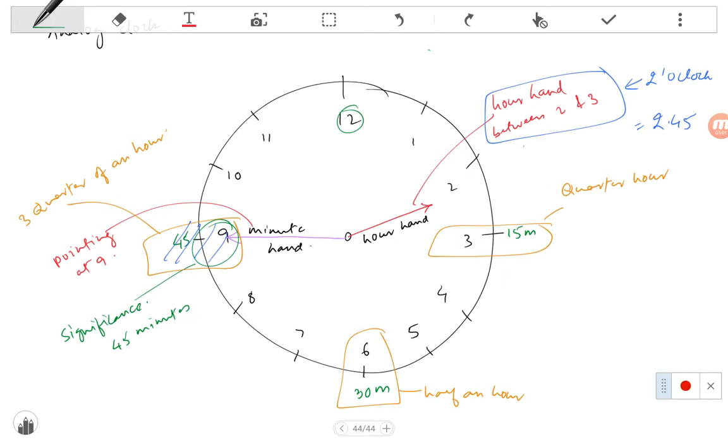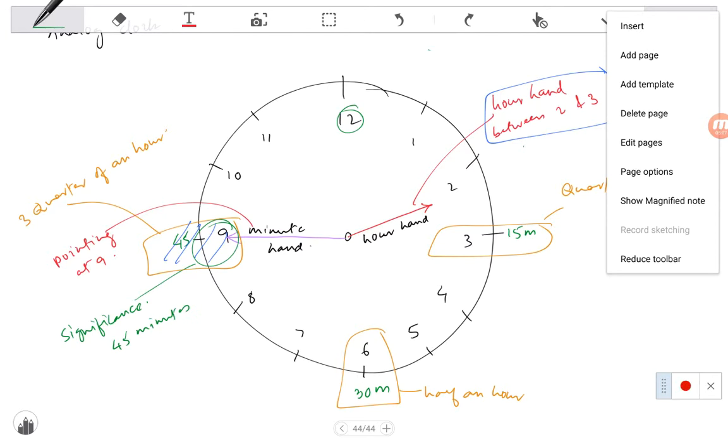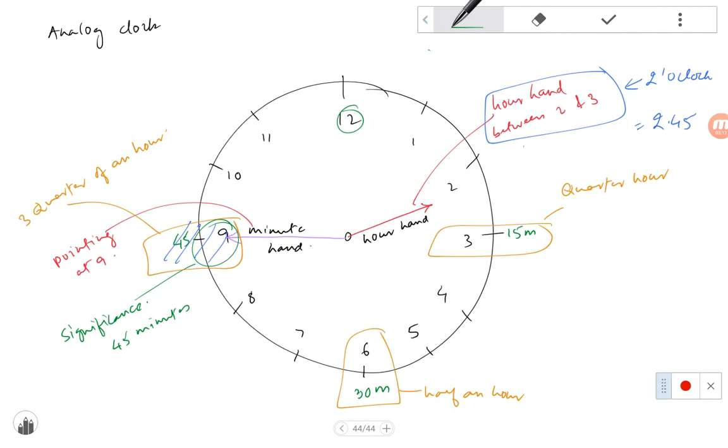A third way of reading the clock could be to see where the hour hand is moving towards. We can see the hour hand is moving towards three.